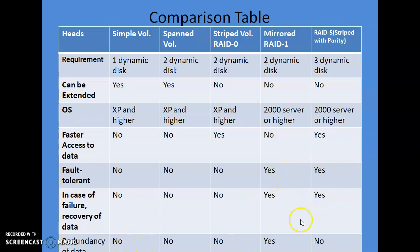Regarding redundancy: mirrored volume stores data at two places — same data is stored redundantly. None of the other volumes are redundant. Regarding space: simple volume requires one drive; spanned volume can use different space from each drive — e.g., 1200 MB from one and 1500 MB from another; striped volume and mirrored volume use equal space across all disks, and the same applies to RAID 5.